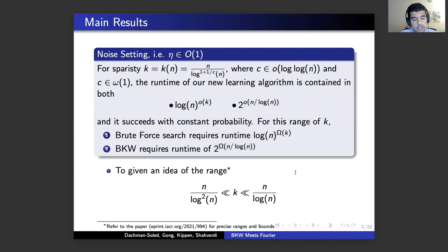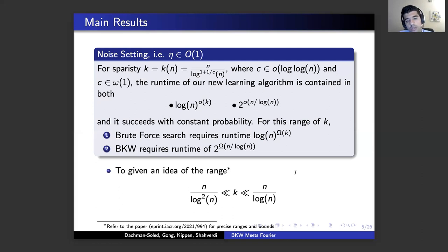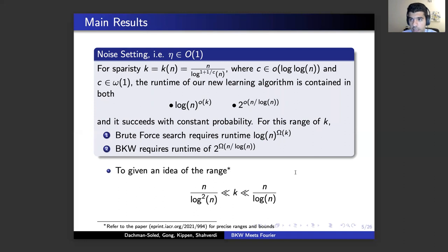For the constant noise setting, we show that for sparsity k equal to n over log^(1+1/c) n for a certain range of c, the runtime of our algorithm is (log n / k)^(o(k)) and also 2^(o(n/log n)). In this setting, the runtime of brute force is (log n / k)^(Ω(k)) and the runtime of BKW is 2^(Ω(n/log n)). Our algorithm is asymptotically better in the exponent compared to both. To give an idea of the range of k, think of k much smaller than n/log n but much bigger than n/log² n.